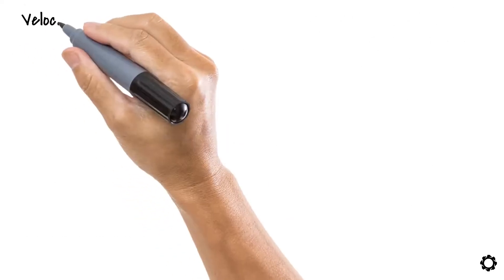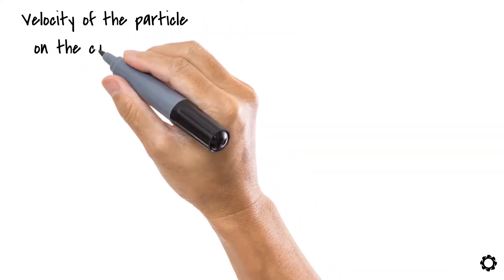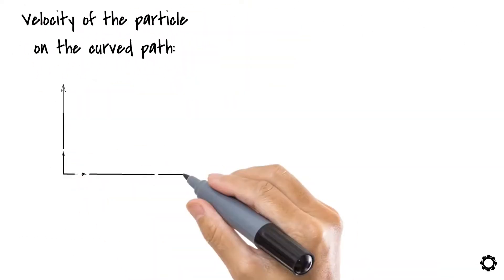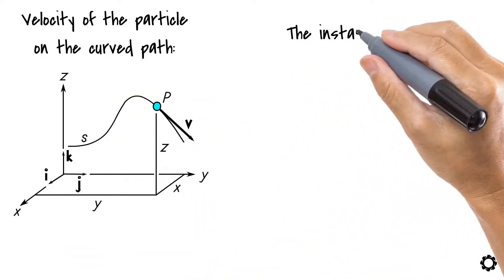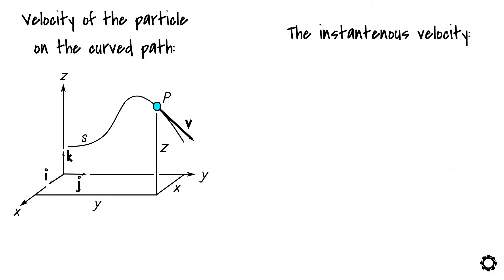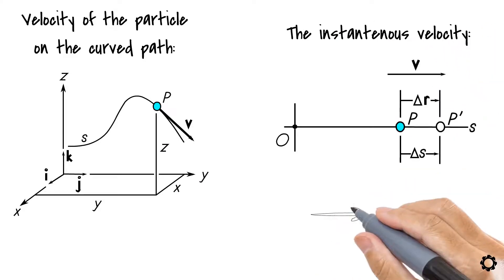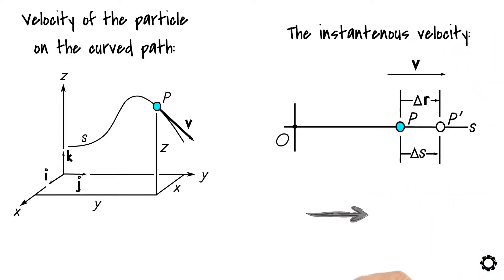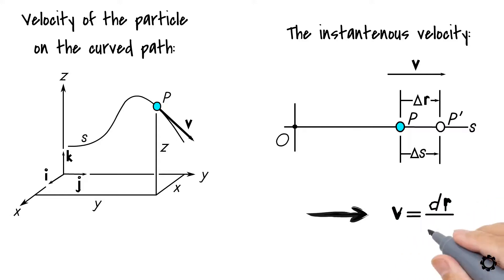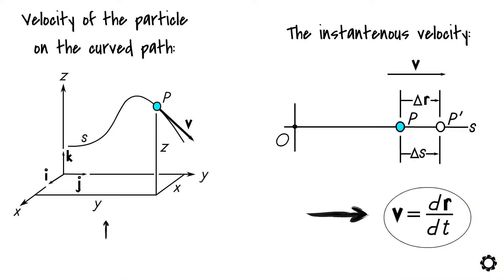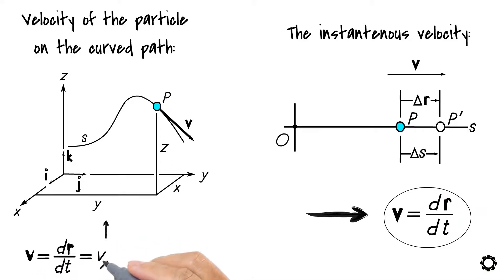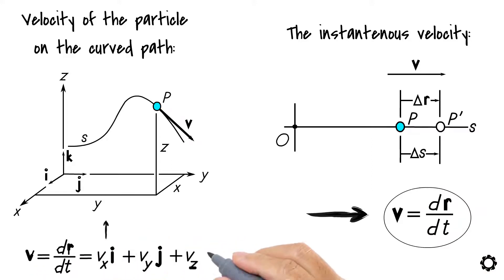Likewise, the velocity of the particle on the curved path can also be represented by using Cartesian notation. You may remember from the previous video that the instantaneous velocity of a particle in rectilinear motion was represented by the equation v equals dr by dt. Now in curvilinear motion, this equation becomes v equals dr by dt equals vx·i plus vy·j plus vz·k.